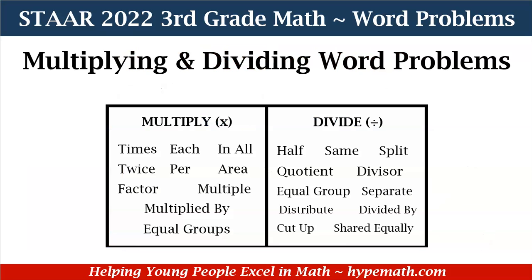Let's review some of the words we may see when reading word problems that means we need to multiply or divide. Let's start with multiplication first. We may see: times, each, in all, twice, per, area, factor, multiple, multiplied by, or equal groups.